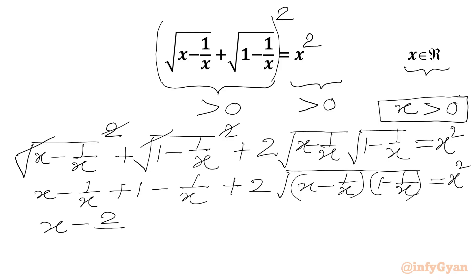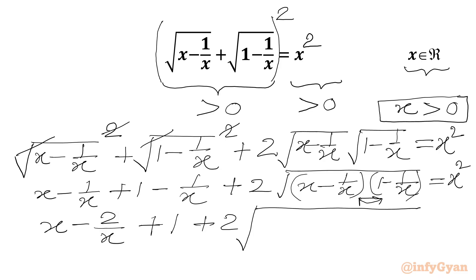So we get: square root of (x − 1/x + 1) plus 2 times square root of x, and combining terms, we arrive at: x − 1/x times (−1/x + 1/x²) equal to x².